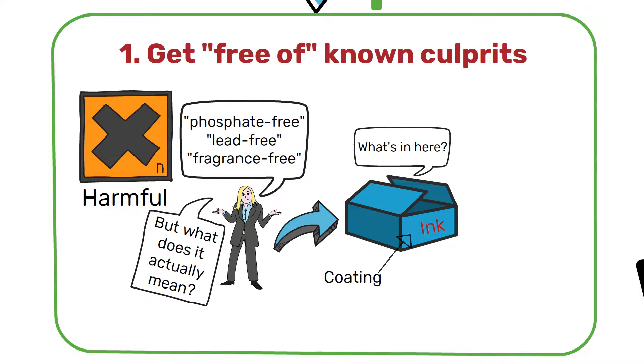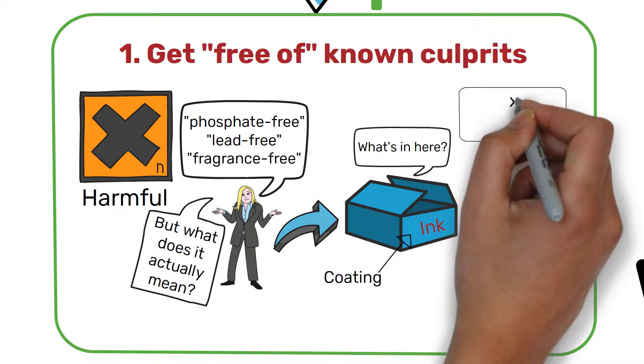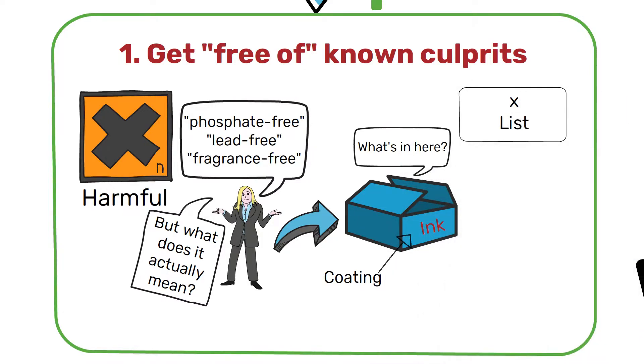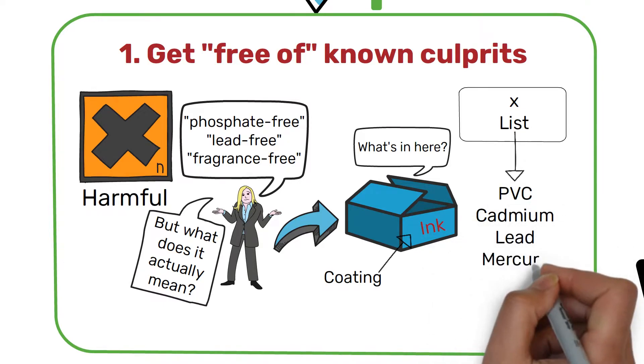Additionally, some substances are known to be bioaccumulative and getting free of them is always a productive and crucial step. Some substances belong to what we call the X list and they include materials such as PVC, cadmium, lead and mercury.